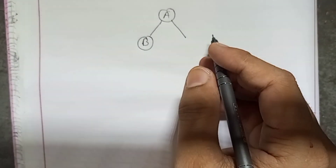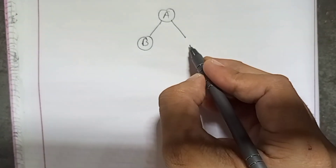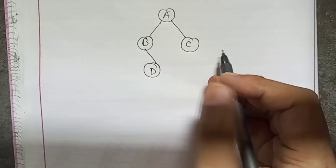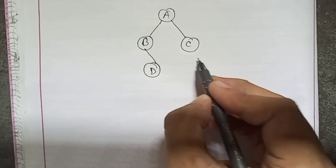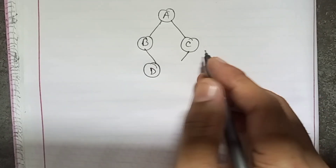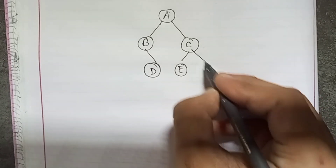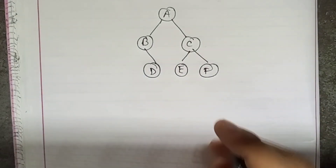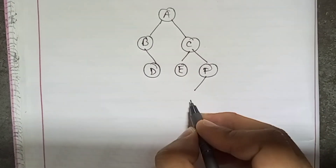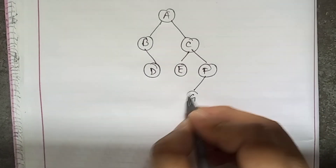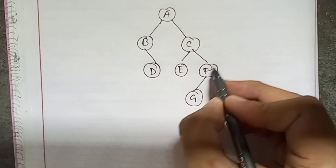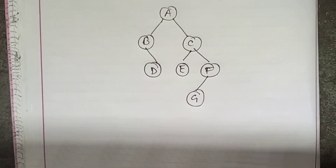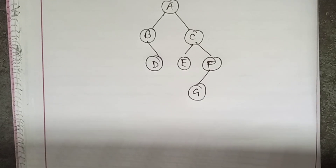We have node A, with left node B and right node C. Then we create node D, and the children of C are E and F. Then we create the left child of F as G. So this is the binary tree whose traversal we have to do.